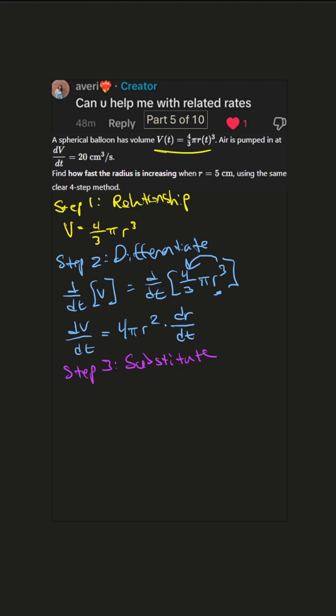So air is being pumped in at 20 centimeters cubed per second, so that's the dV dt. So 20 equals 4 pi r squared dr dt.